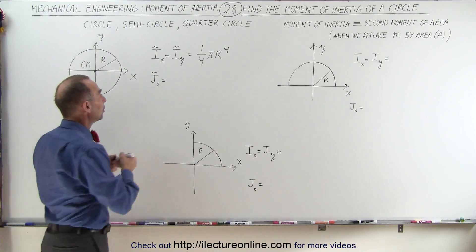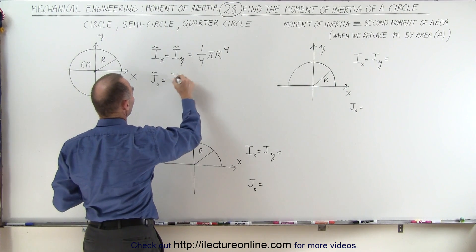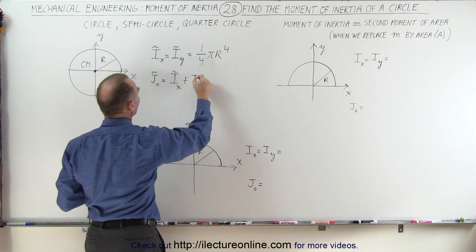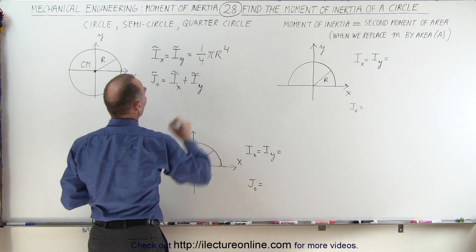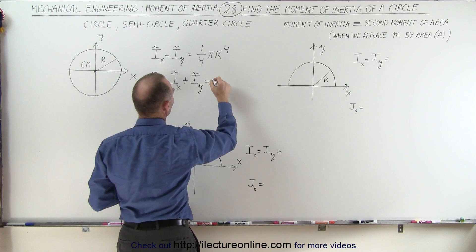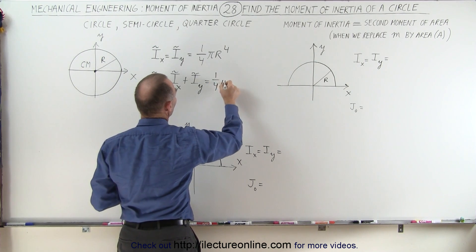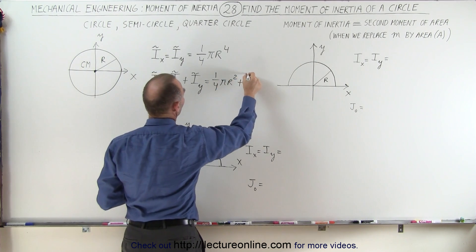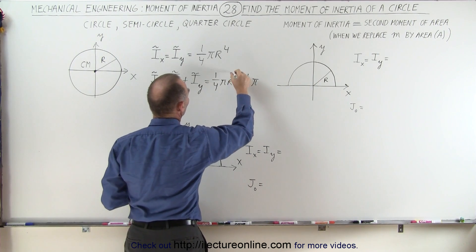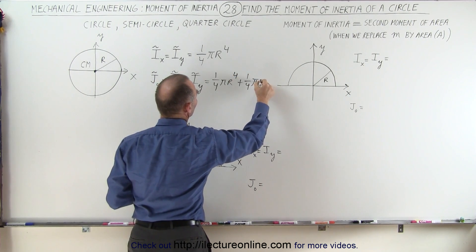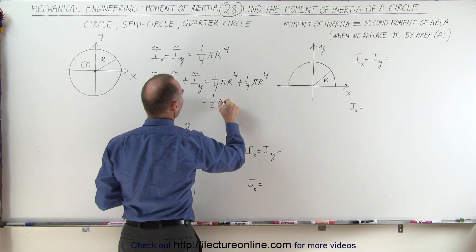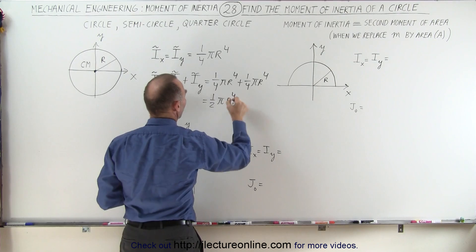Let's find out if we do. We know that this is going to be equal to the sum of the moment of inertia about the x-axis plus the moment of inertia about the y-axis. So when we add two of those together, we get one-quarter pi r to the fourth plus one-quarter pi r to the fourth, which is equal to one-half pi r to the fourth power.